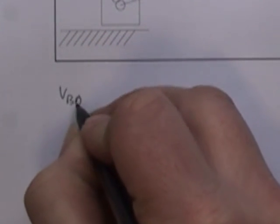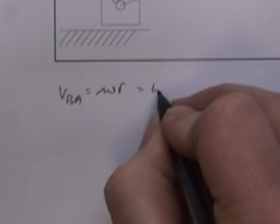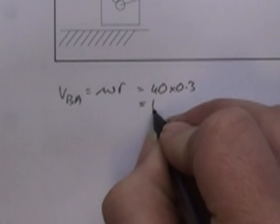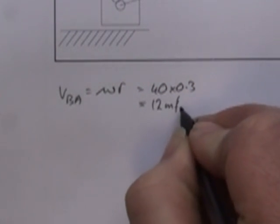I can establish this velocity. VBA is equal to omega R, which is equal to 40 times 0.3 meters, which is 12 meters per second.